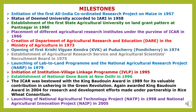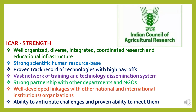Further milestones include: launching of the Lab to Land Program and the National Agricultural Research Project (NARP) in 1979; initiation of the Institution Village Linkage Program in 1995; establishment of the National Gene Bank at New Delhi in 1996. ICAR was bestowed with the King Baudouin Award in 1989 for its valuable contribution in ushering the Green Revolution, and again awarded the King Baudouin Award in 2004 for research and development efforts under the Rice-Wheat Consortium. Other milestones include launching of the National Agriculture Technology Project (NATP) in 1998 and the National Agriculture Innovation Project (NAIP) in 2005.